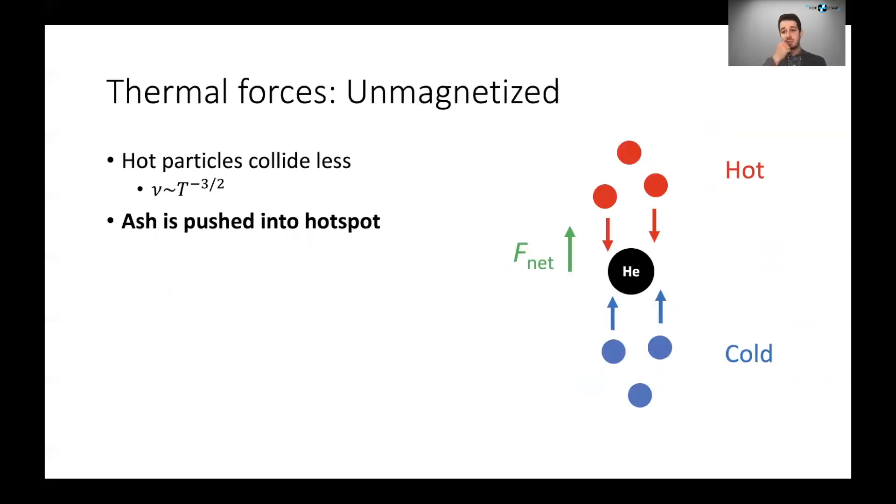So what happens to this process if you have a temperature gradient and so far an unmagnetized plasma? Well, one thing to know about particles in plasma is that hot particles collide a lot less than cold particles. So if you have your little helium ion, it'll have hot particles coming in from the hot part of the plasma, the hot spot diffusion core, and those aren't really interacting with it very much because hot particles collide less. However, the cold particles are hitting it from the cold region and they're colliding way more. So the net force will be into the hot region away from the cold region and the net result is that your fusion ash is pushed into your hot spot thus further choking the fusion reaction. So this is bad.